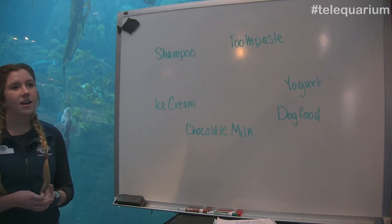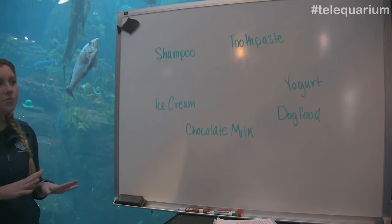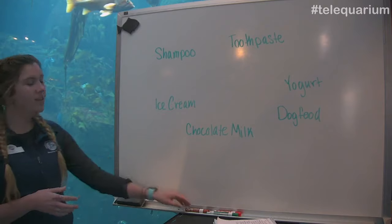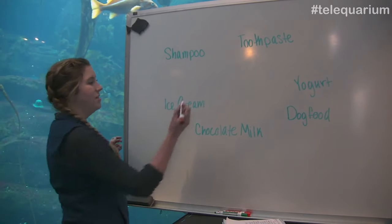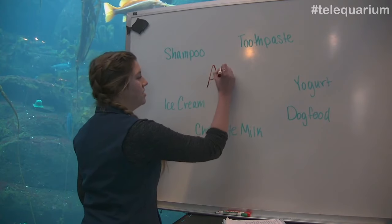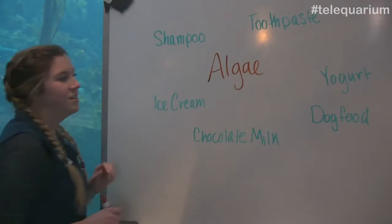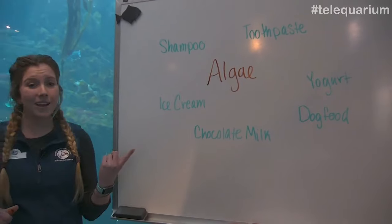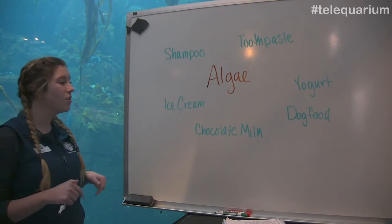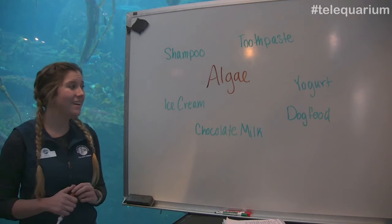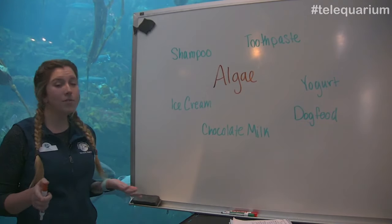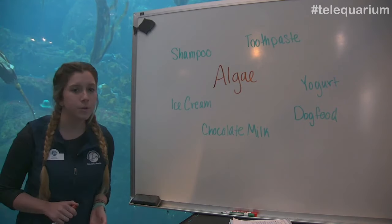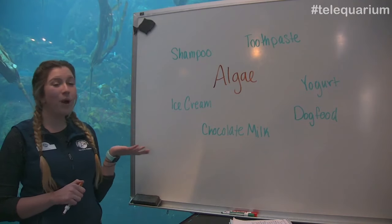All right, everybody. Hopefully you've had a little bit of time to look at this list. It might be kind of tricky, but what all of these products actually have in common is they all contain algae. So they all have algae in them. Shampoo actually has algae in it. Your toothpaste has algae in it, believe it or not. Things like yogurt, dog food, chocolate milk, and yes, even ice cream can have algae in it. So without you even knowing it, you probably interact with algae every day — or at least I hope you do. I hope you brush your teeth!